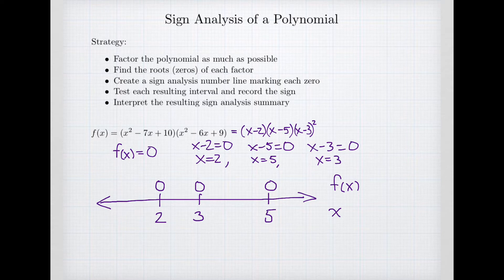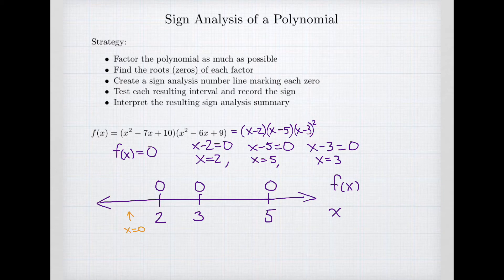We're going to create a sign analysis summary by choosing values. For example, I might pick x equals 0 from the interval negative infinity to 2. I think about what sign f(x) has by putting that value into the formula. x minus 2 with x equals 0 is negative 2; x minus 5 is negative 5; x minus 3 is negative 3 and it's squared. So we have a negative factor times a negative factor times a negative factor squared — that's four negatives multiplied together, which is positive.